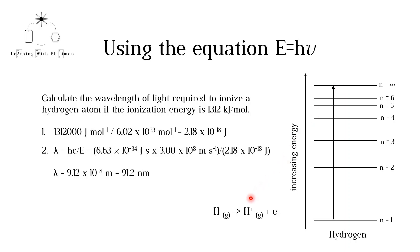This question asks us to calculate the wavelength of light required to ionize one hydrogen atom. Therefore the first step is to calculate the energy required for one atom. To do this, we divide the ionization energy by Avogadro's constant, which is the number of atoms per mole. Remember to convert kilojoules to joules by multiplying by 1000.